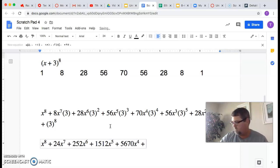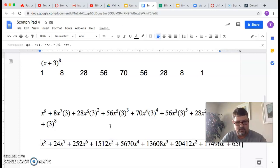Plus 13608x to the 3. Plus, almost there, 20,412x to the 2. Plus 17,496x to the 1. Plus one last number, 6561. And it's out of space. It won't let me do it. That last number there is 6561.